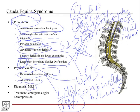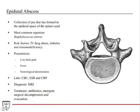Diagnosis requires an MRI. Treatment — this has to go to the OR right away to take the compression off the nerves. The spine is a very broad topic; the goal has been to give you the highest-yield content for your exams.